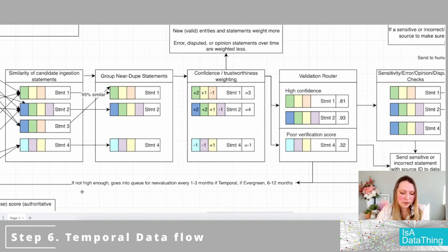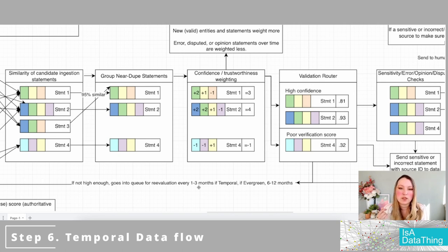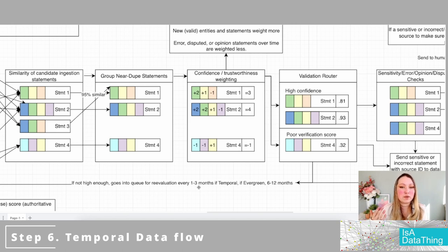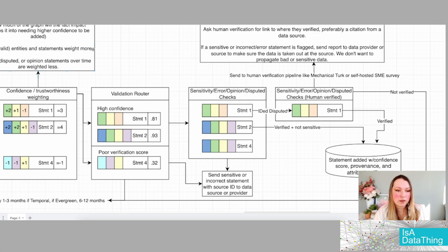On the temporal piece: if confidence is not high enough or there's not enough data to support it, it goes back into the queue for reevaluation — at least every one to three months. For evergreen content that doesn't change very often, maybe six to twelve months. If you need temporal information really fast, maybe it's an hourly or daily refresh. Or maybe you skip some steps and just put a notice in your UI that this has not been verified or there isn't enough evidence to say it's accurate or not — making sure end consumers know what they can trust.